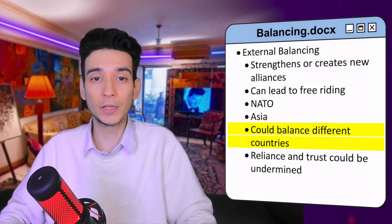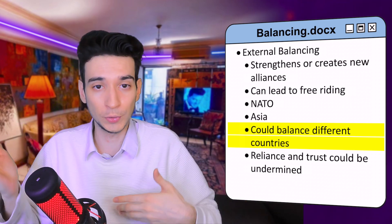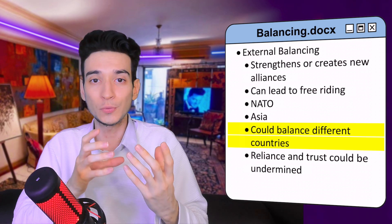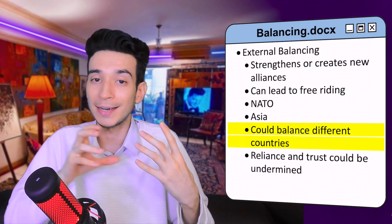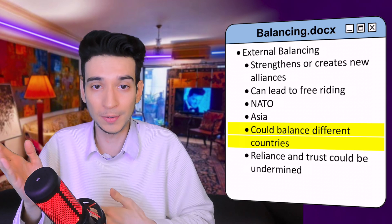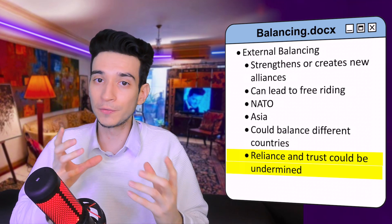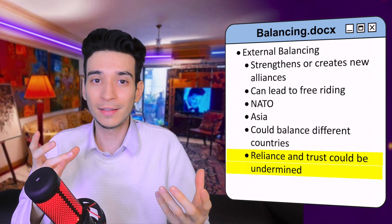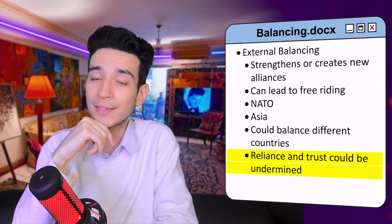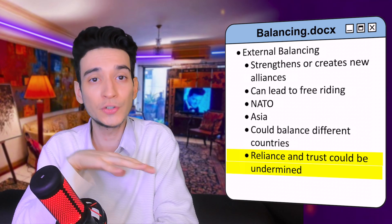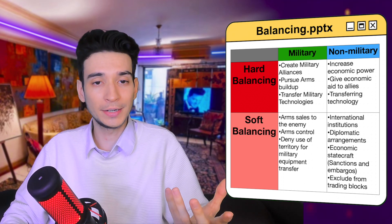There are cases where countries form alliances because both want to balance a different country — for example, a great power might ally with a smaller power seeking to balance another great power, while the small power may actually be seeking to balance a regional power. One challenge with external balancing is that due to the anarchic nature of the international system, trust in other countries can be undermined, making alliances sometimes more of a temporary arrangement.